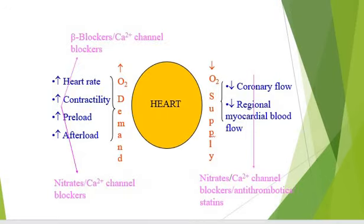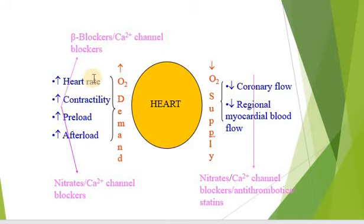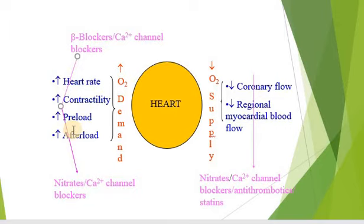How can we achieve these treatment goals? We have to reduce oxygen demand. For that purpose we use beta blockers and calcium channel blockers, which decrease the heart rate, decrease contractility, decrease preload, and decrease afterload — these organisms are suppressed by beta blockers and calcium channel blockers. The second option is to decrease the preload and afterload, which is achieved by nitrates and calcium channel blockers. The above two factors are reduced by beta blockers and the last two factors are reduced by nitrates and calcium channel blockers.